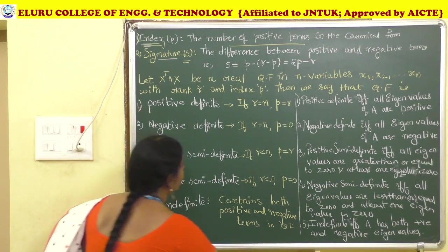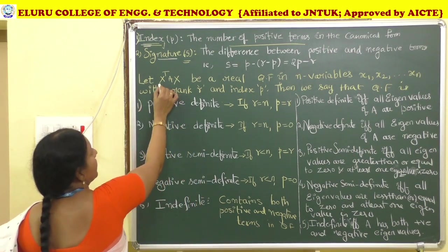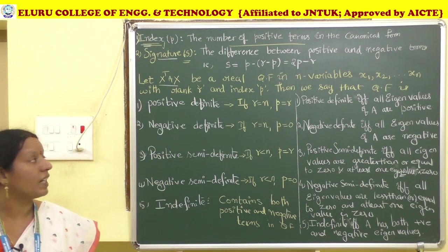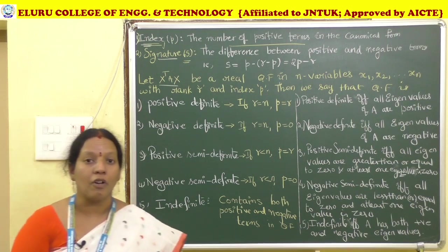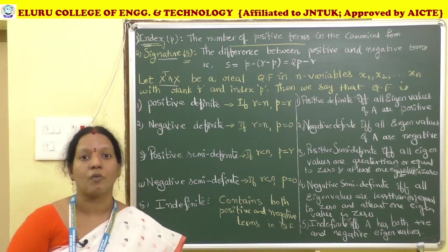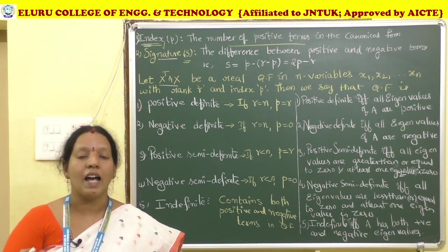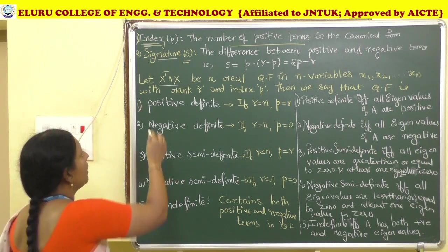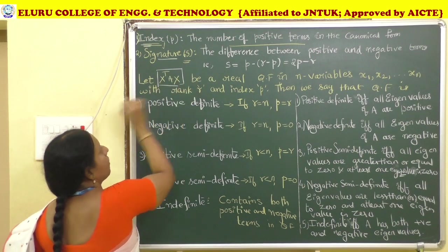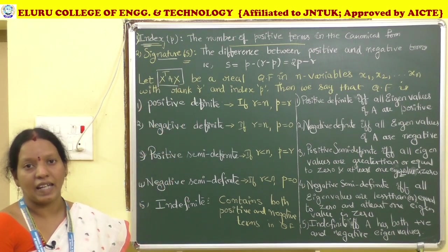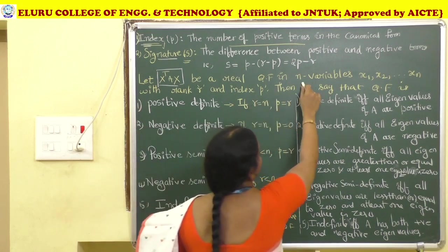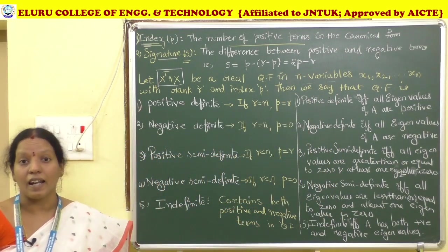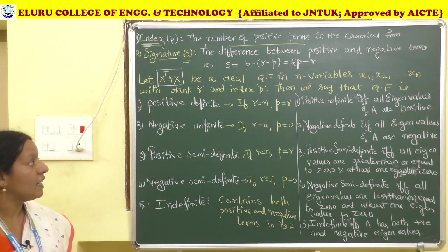Now, let X-transpose AX be the real quadratic form with n variables X1, X2, so on, Xn with rank R and index P.